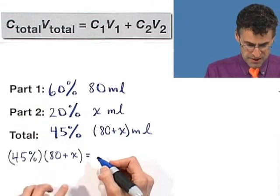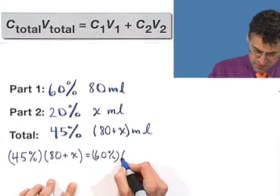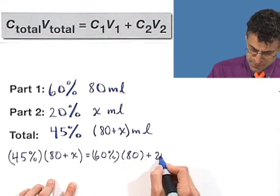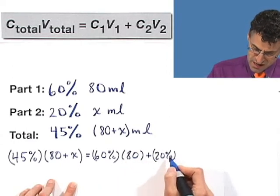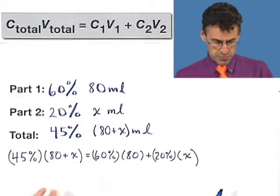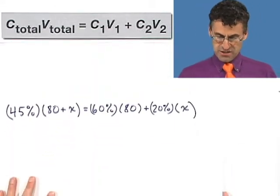And then what's the other side? I see 60% of 80 plus 20% of, which means times, this quantity x. So now all this work has brought us to this algebraic equation, which we can now actually solve.